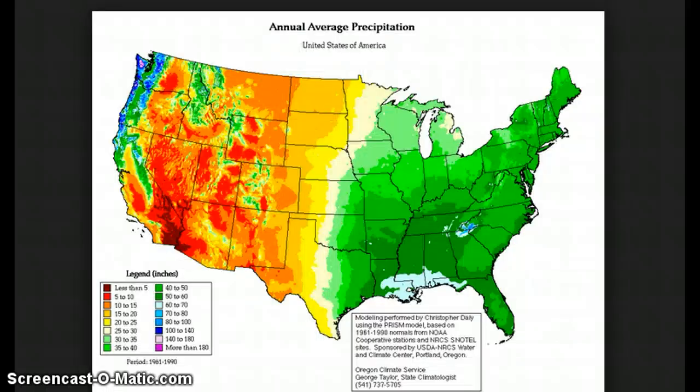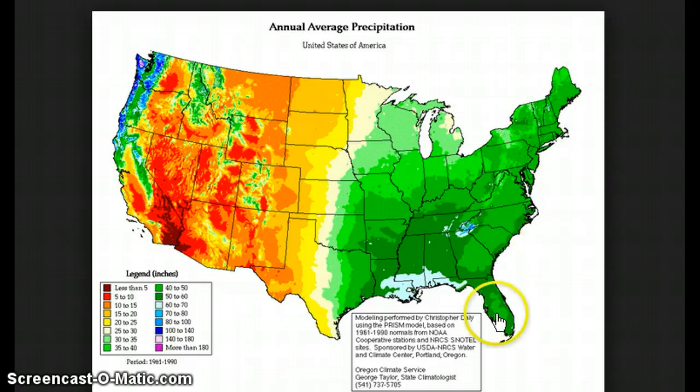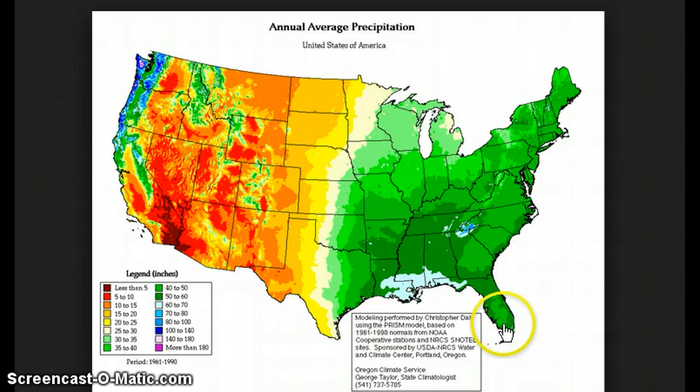In the United States, this is kind of hard to see because we have other factors affecting how much precipitation we get besides just ocean current. But we can see that in general, the east coast, which is on a warm current, is all green — because of that warm current.